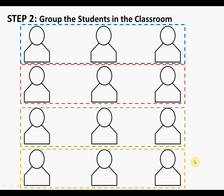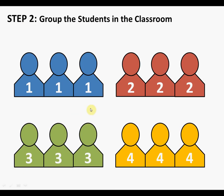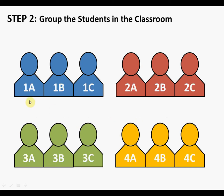Assign a number to each group — group 1, 2, 3, and 4 — and ask them to remember it. Then give each student within the group a letter: A, B, and C. So within group 1, each student is 1A, 1B, or 1C. Every student can designate themselves with this number-and-letter system, which will come in handy later.